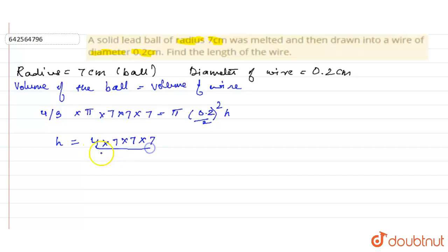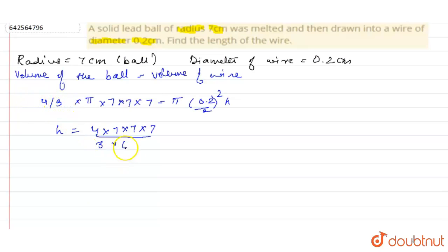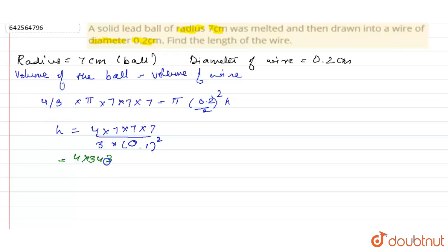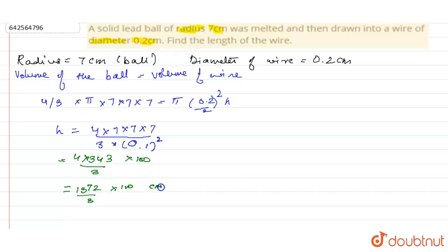Simplifying further, h = (4 × 343) / (3 × 0.01). Multiplying numerator and denominator by 100, we get h = 1372 / (3 × 100) = 1372/300 centimeters.